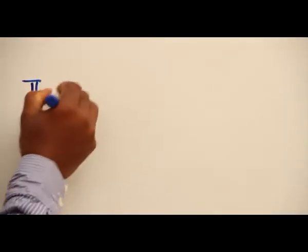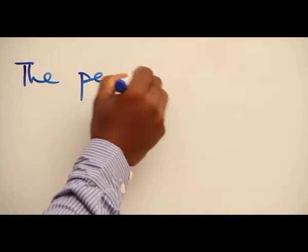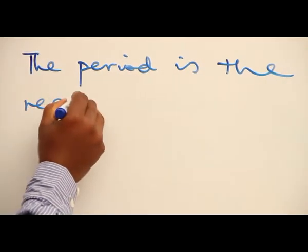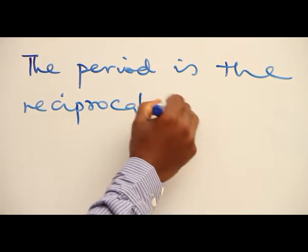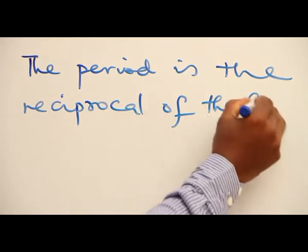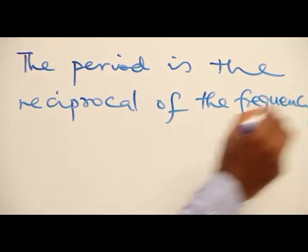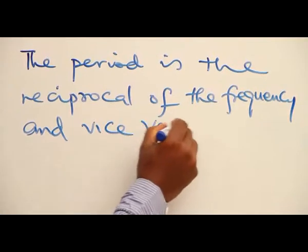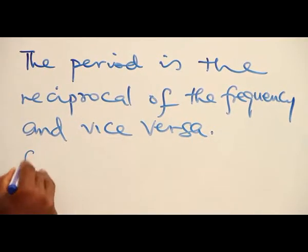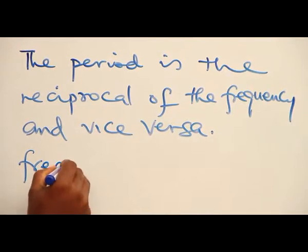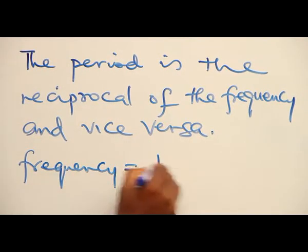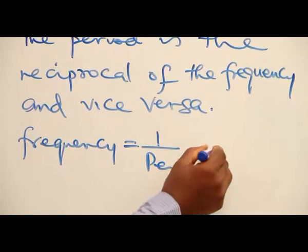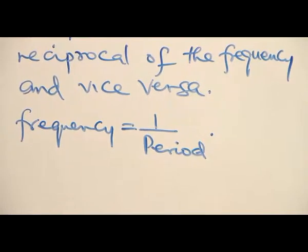The period is the reciprocal of the frequency, and vice versa. The frequency is 1 divided by the period, or the period is 1 divided by the frequency.